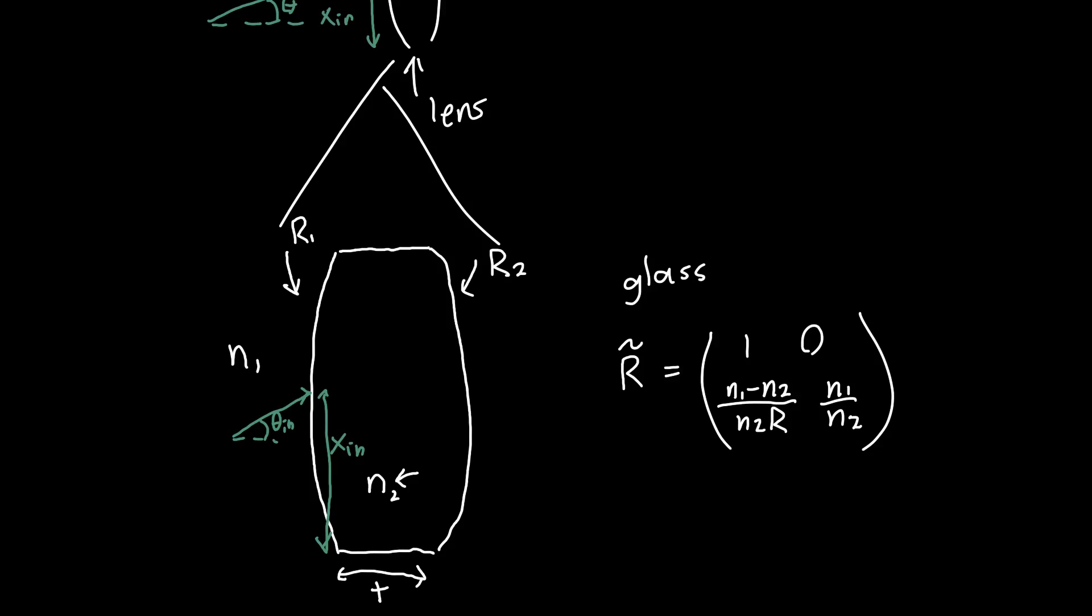We also know the propagation matrix, so if we want to propagate by a distance t. But if we're dealing with a thin lens, then we usually assume this distance t is 0. For a thin lens, all we care about is traveling through the first curved surface, then traveling through the second curved surface.